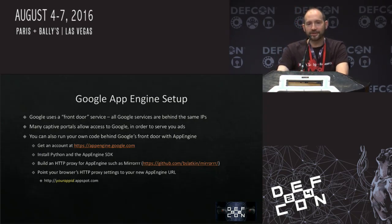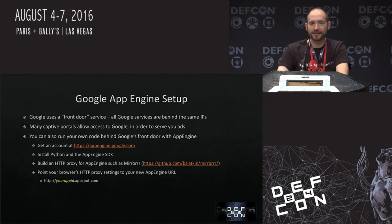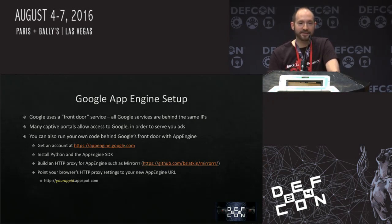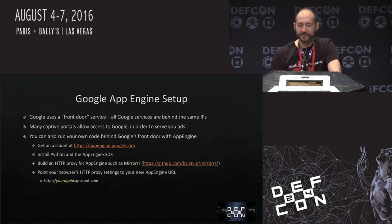Google App Engine: Google uses a front-door service, and all Google services are behind the same IPs. So if a captive portal allows access to Google, it also allows access to Google App Engine, which means you can run your proxy behind Google's front door. The same access the captive portal is using to download ads will also let you get to your tunnel. Just get your App Engine account, install Python and the App Engine SDK, and there's a piece of software called Mirrrr — with three R's — that is an App Engine-compatible Python proxy. Put that in there and you can browse to yourappid.appspot.com and get to your own proxy.